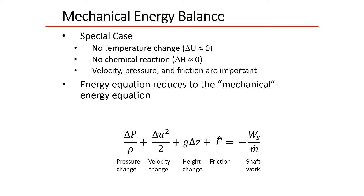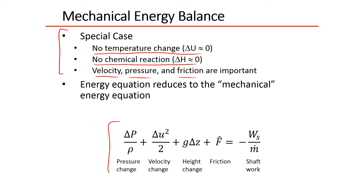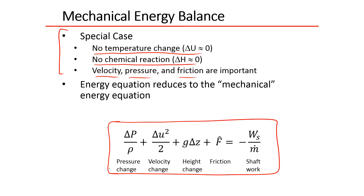This is an overview of mechanical energy balances. We've covered energy balances in the past, but we're going to cover a simple case where there's no temperature change — delta internal energy equals zero — and no chemical reaction. So with no temperature change and no chemical reaction, we can also say that the enthalpy is about zero. We just have velocity, pressure, and friction as the important terms, and our energy equation reduces to this form.